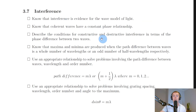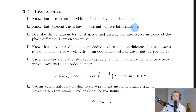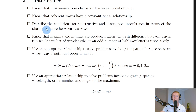Coherent waves have a constant phase relationship — that is the key phrase you need to state if asked what is meant by coherent waves. Remember that also means the waves have a constant speed, frequency, and wavelength.